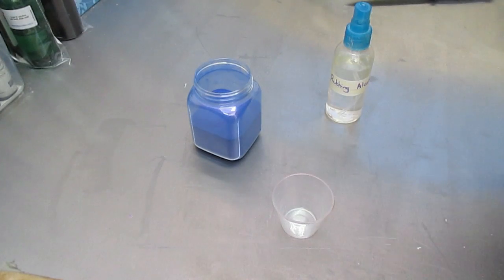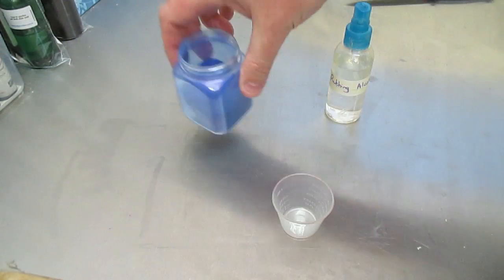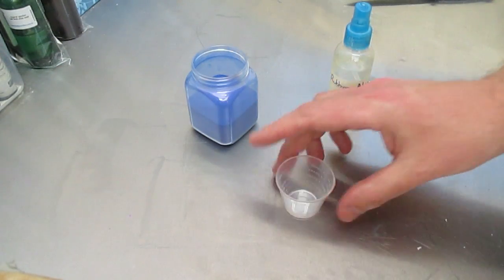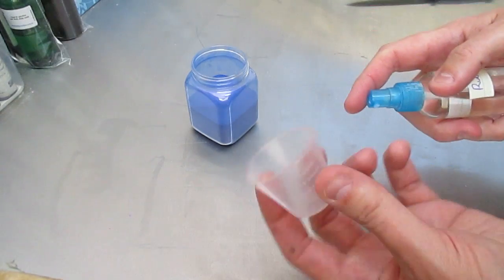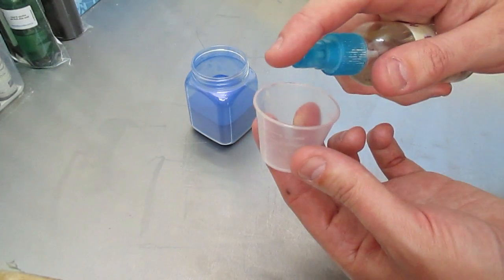So another thing rubbing alcohol is really good for is mixing micas or actually making a mica from a powder like this into a liquid. So if I just spray with my rubbing alcohol into a tiny little cup like this, just a couple of drops depending on how much mica I'm going to be using.